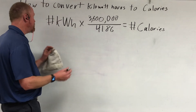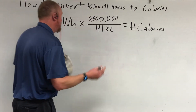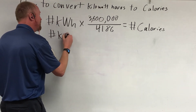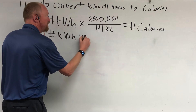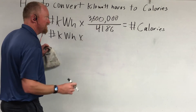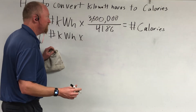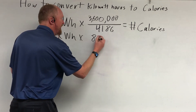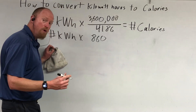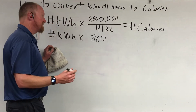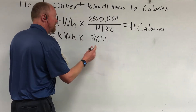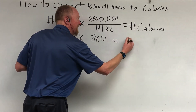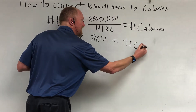You can simplify this. Take the number of kilowatt hours and multiply by three million six hundred thousand, divided by four thousand one hundred and eighty-six, which equals 860. So simply take your number of kilowatt hours, multiply it by 860, and that gives you the number of calories.